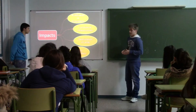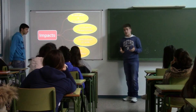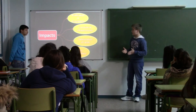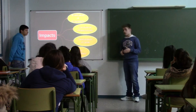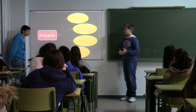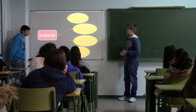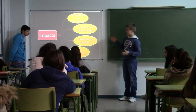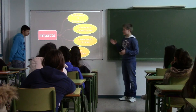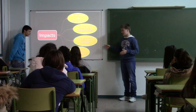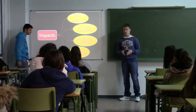Now that we have seen the composition of the two types of acid rain, we are going to see the impacts that acid rain can have: acidification of ecosystems, corrosion of infrastructures, deterioration of lands, and even greenhouse effect.